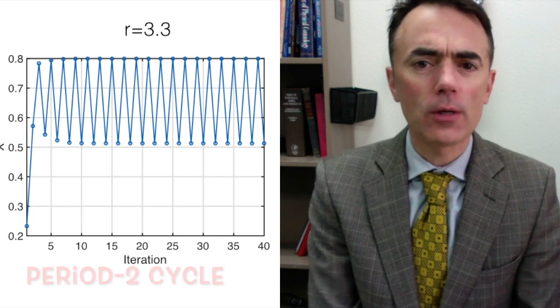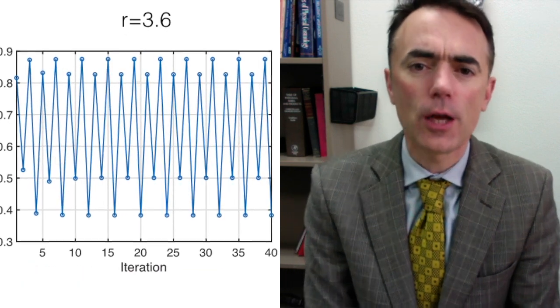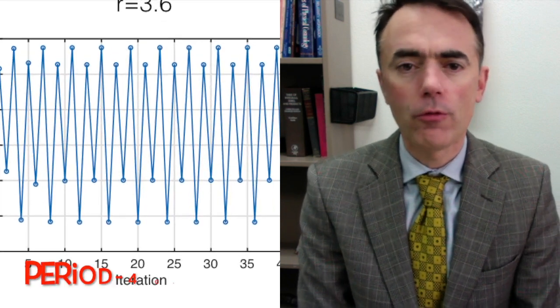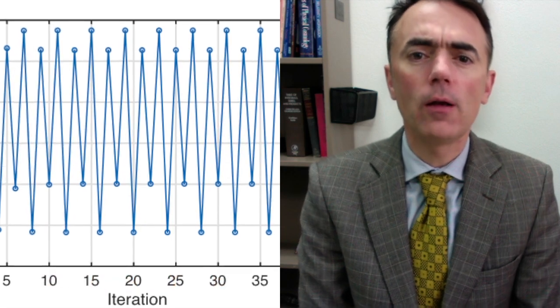For values a bit larger, let's say 3.5, the system shows 4 generation oscillations. We call this a period 4 cycle. If we continue increasing r, we find other period doublings to period 8, 16, 32, and so on.